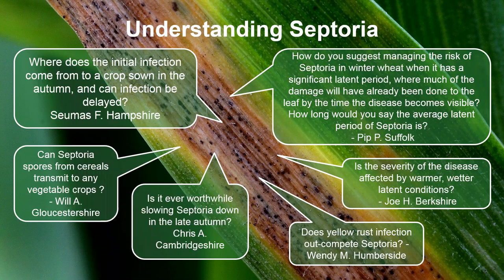There's plenty of septoria infection around because we're growing wheat in rotations — there's a lot of wheat about and therefore septoria is surviving from crop to crop. There's no real problem with it jumping from crop debris from previous crops or coming in as airborne ascospores which land on the emerging crop and infect it.